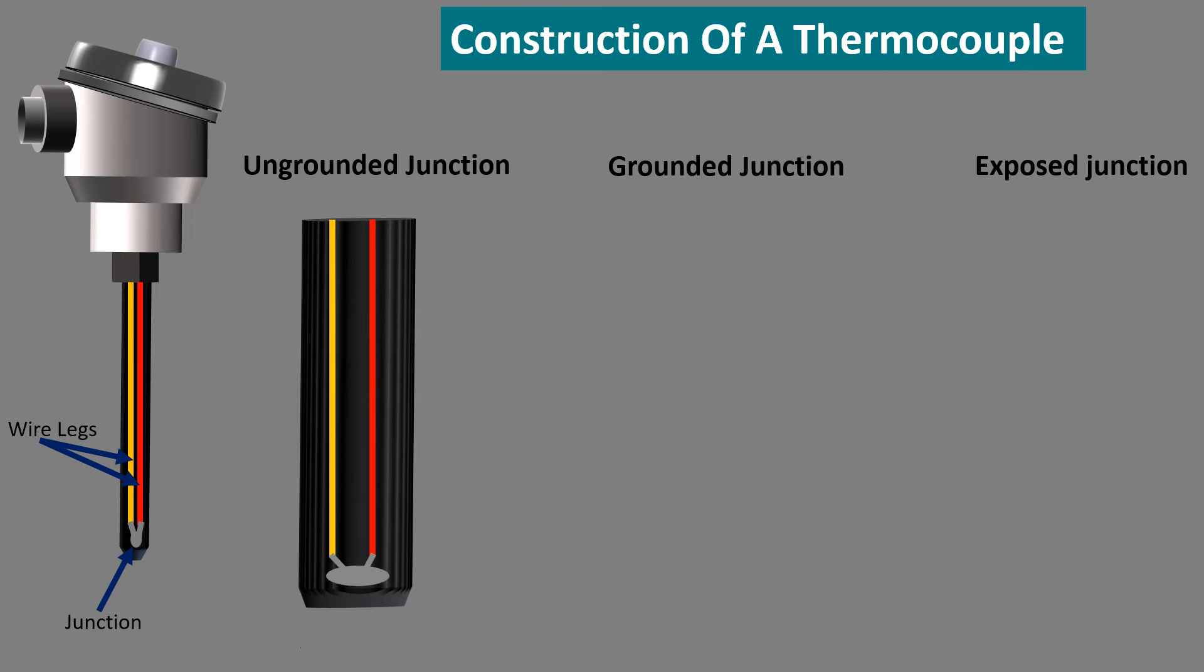Ungrounded junction. In this type of junction, the conductors are totally separated from the protecting cover. The applications of this junction mainly include high pressure applications.